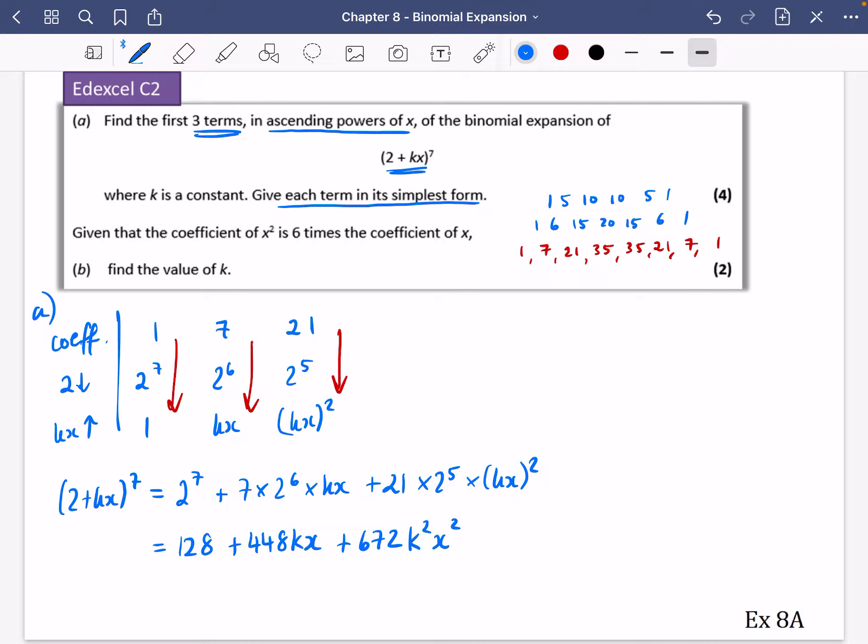Now we're going to have a think about what it's asking in part B. It says, given that the coefficient of x squared is 6 times the coefficient of x, find the value of k. Okay, so let's just write down what it's trying to say here. The coefficient of x squared. The coefficient of x squared is this bit.